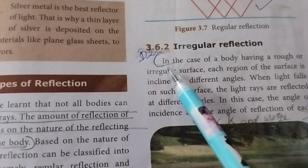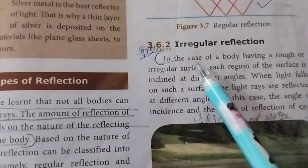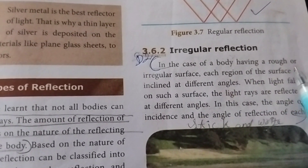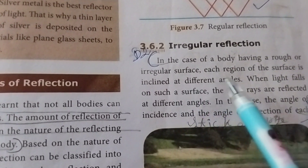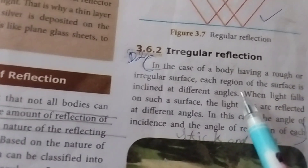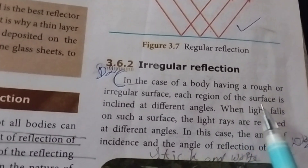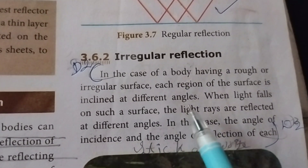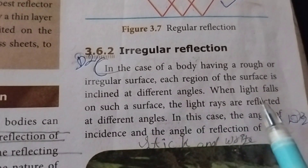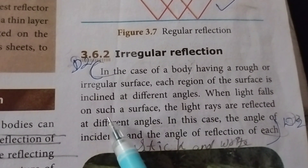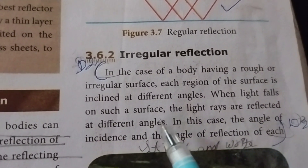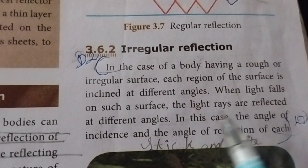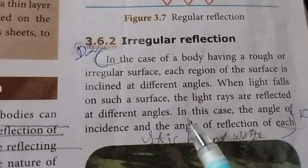In the case of a body having a rough or irregular surface, each region of the surface is inclined at different angles. When light falls on such a surface, the light rays are reflected at different angles, so no clear image is formed. This is called irregular or diffuse reflection.